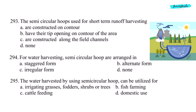Next question: the semi-circular hoops used for short-term runoff harvesting — option B, have their tip opening on the contour of the area. Next question: for water harvesting, semi-circular hoops are arranged in — option A, staggered form.